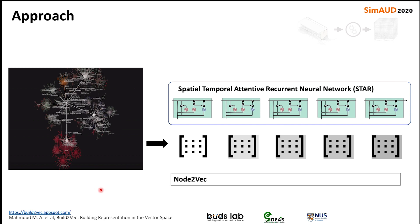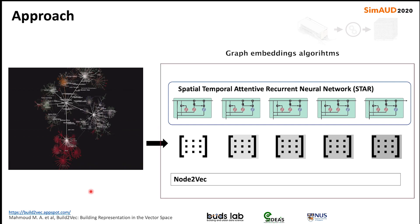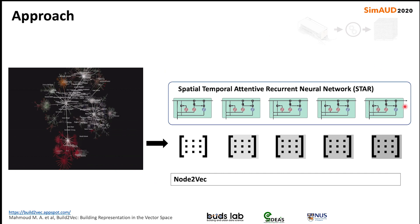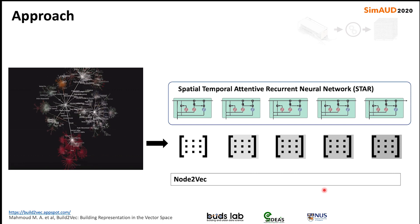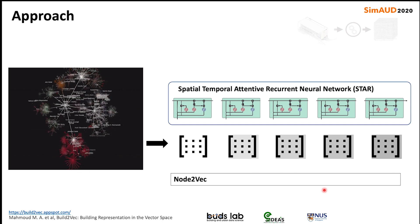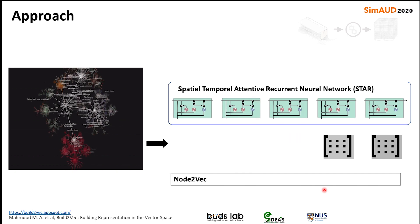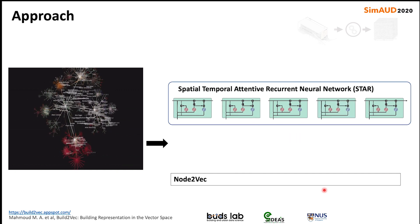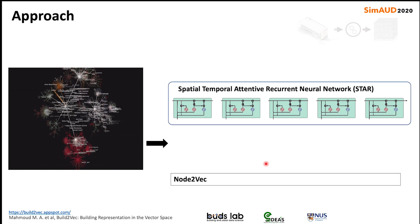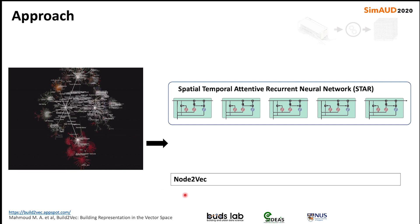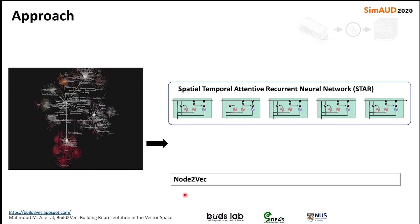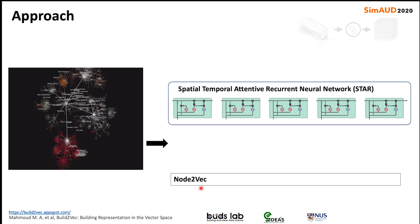After that, this temporal attributed graph is fed into a graph embedding algorithm which converts it into an embedding matrix. The embedding matrix is a low-dimensional matrix where the spatial and temporal data of the building is preserved. We use two main algorithms: the first is called Spatial-Temporal Attentive Recurrent Neural Network, or STAR, and the second is called Node2Vec. STAR is used for dynamic building data while Node2Vec is used for static building data.